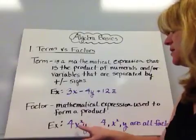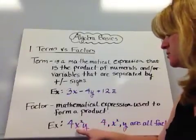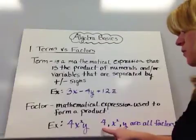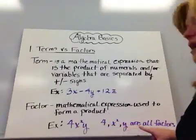4 is a factor because it's multiplied by the x squared and the y. So the 4, the x squared, and the y are all factors.